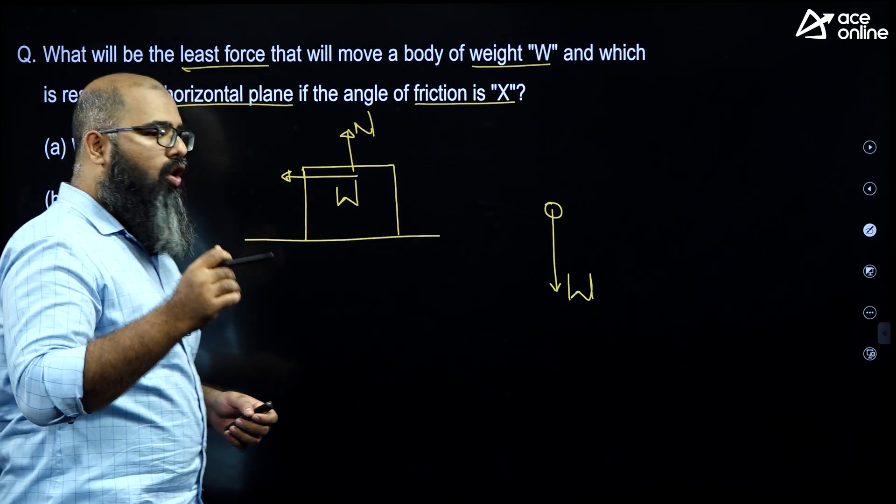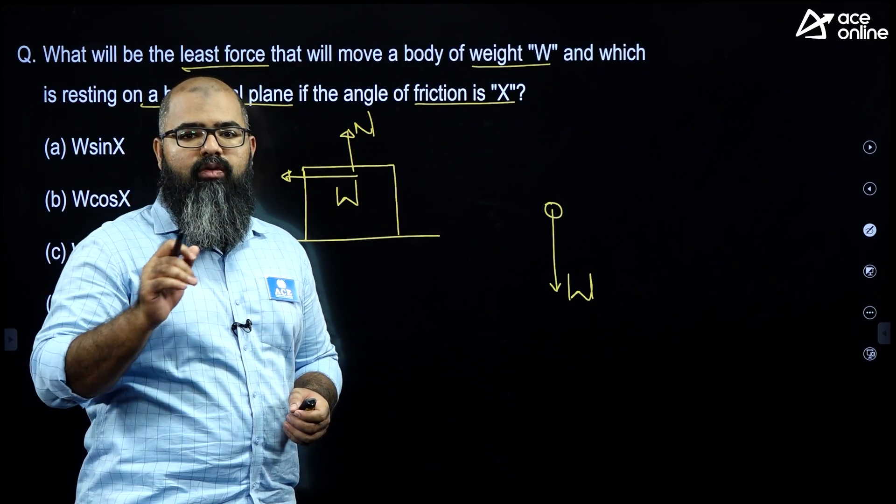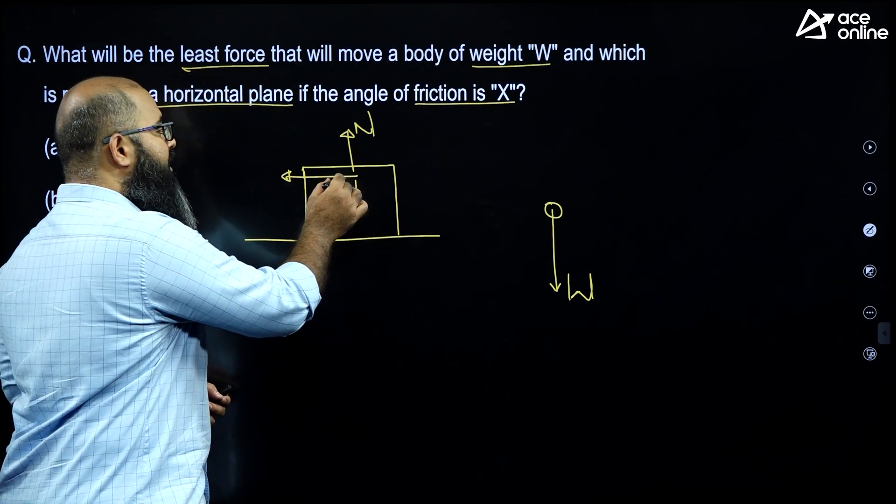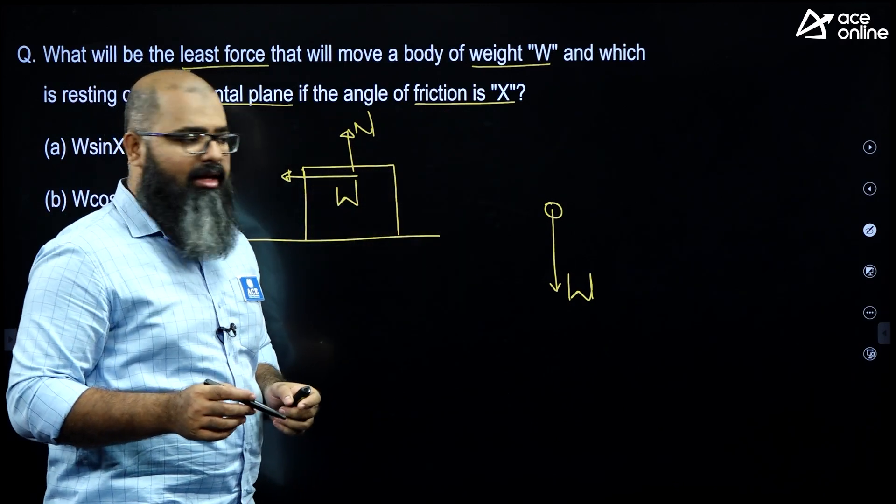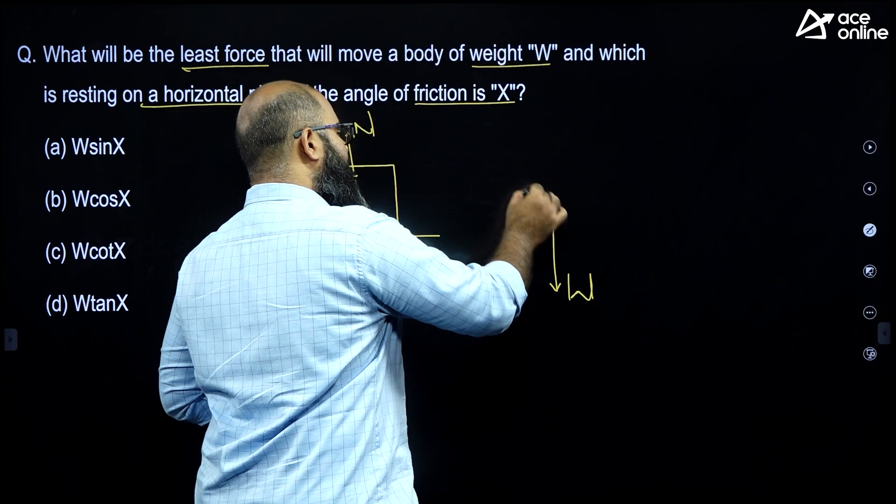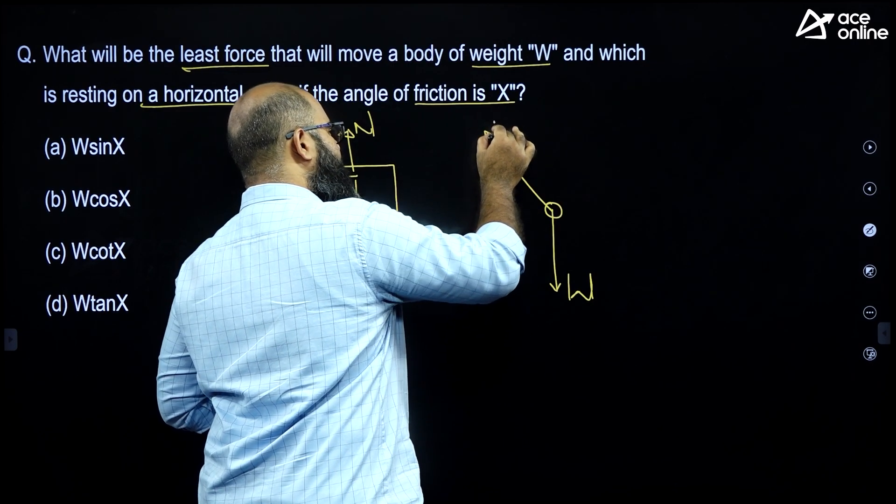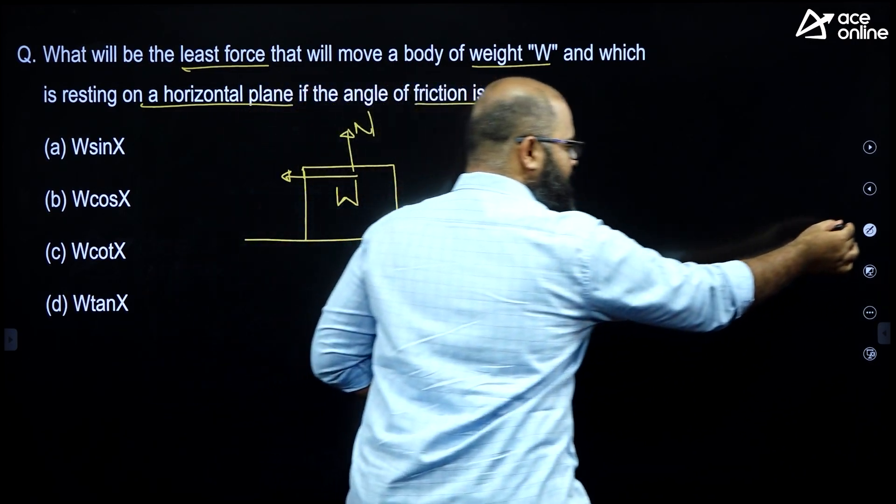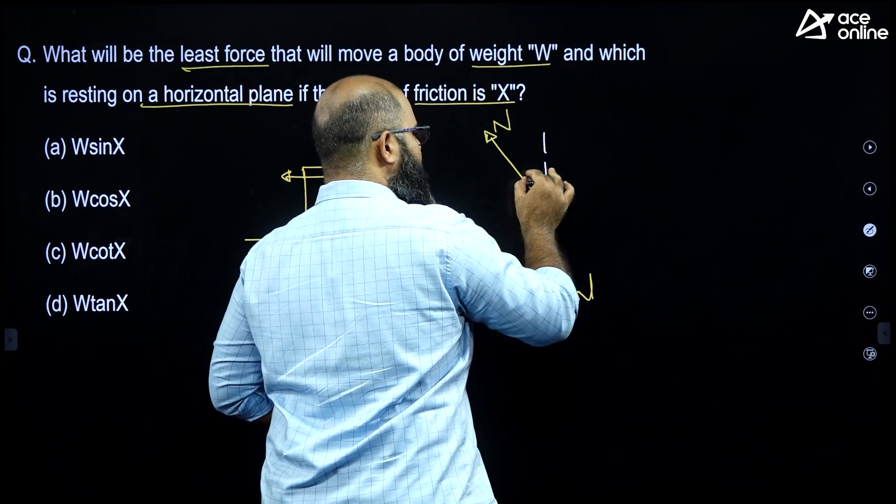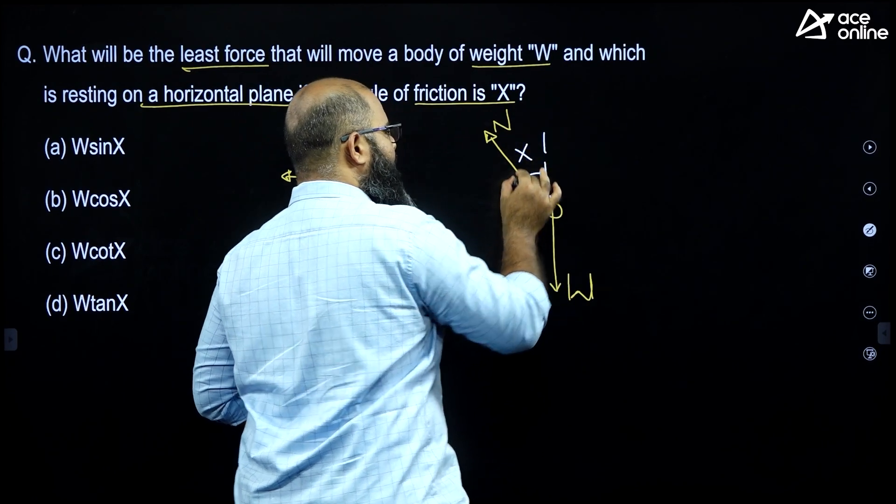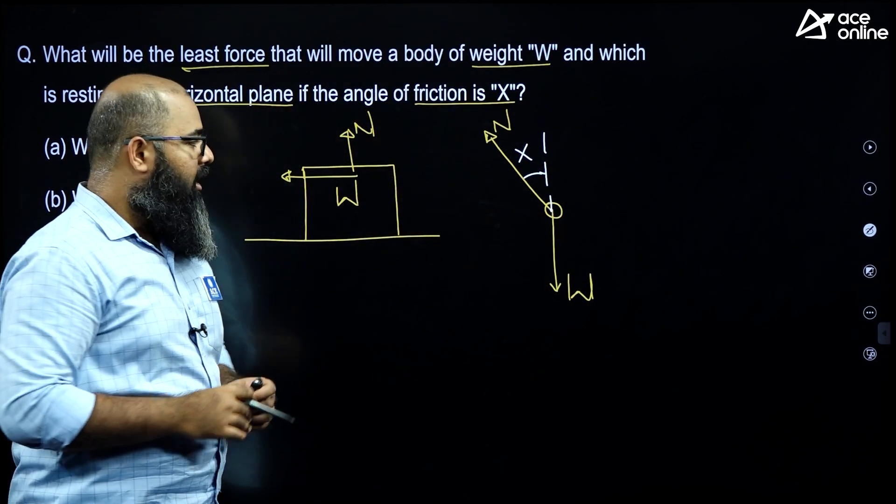I can convert normal and limiting friction both into a single force resultant. And this resultant is supposed to have an angle of X with respect to the normal. That means, my resultant of normal and friction is going to come something like this, such that if I measure this angle, this angle will come out to be equal to X.